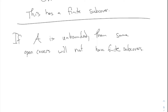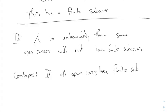If I write the contrapositive: if all open covers have finite subcovers, then A is bounded. I'll mention this fact next time. Finite subcovers are a big deal when it comes to compactness. When I say 'cover,' I mean open cover — we only ever talk about coverings by open sets.